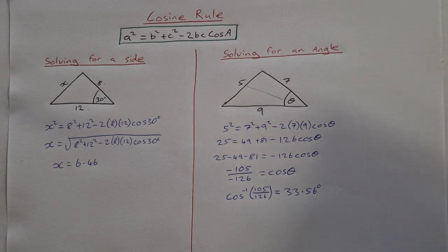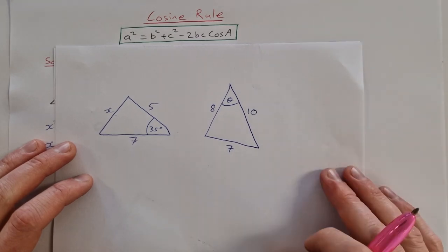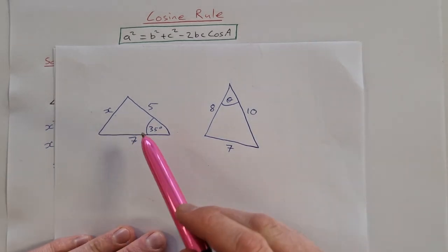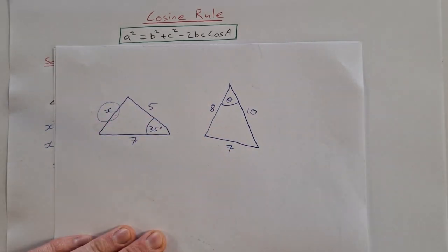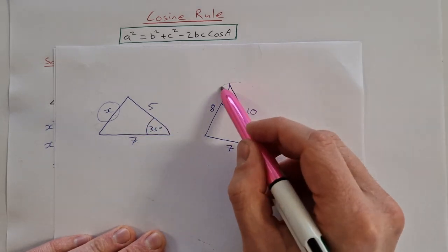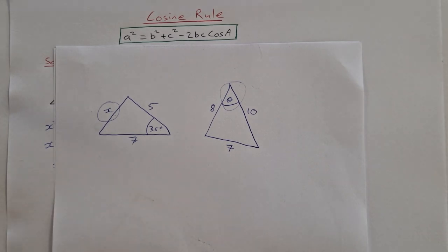So I have a couple for you to try here. So using the same formula, same type, I have one where we're looking to find the side. We have two sides and the angle between them. And one where we're looking to find the angle. And we have all three sides. So give them a go, see how you get on, and write your answers in the comments.